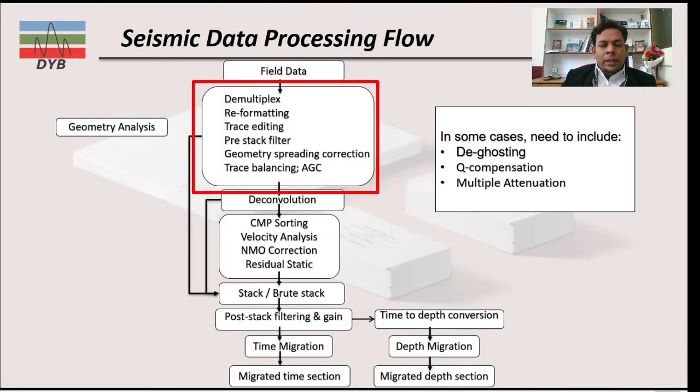This is the workflow we follow for seismic data processing. On the top, we have the field data which is in raw format. Let's say it's a shot gather data. Then we have demultiplexing. In the field data, the data recorded is in multiplex format, so we have to convert from multiplex to demultiplex.